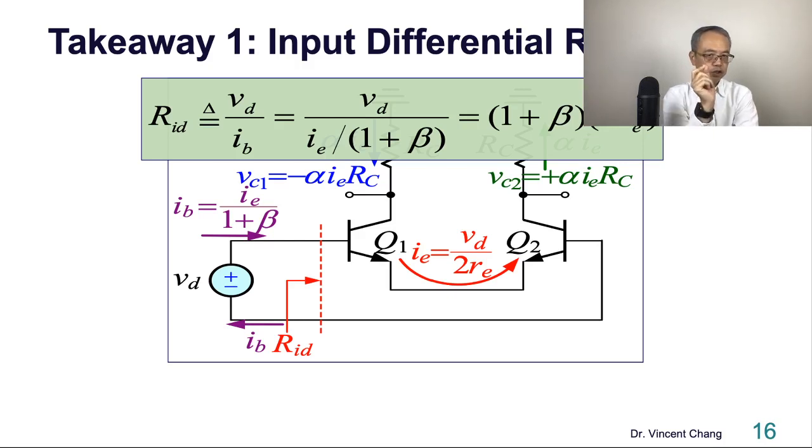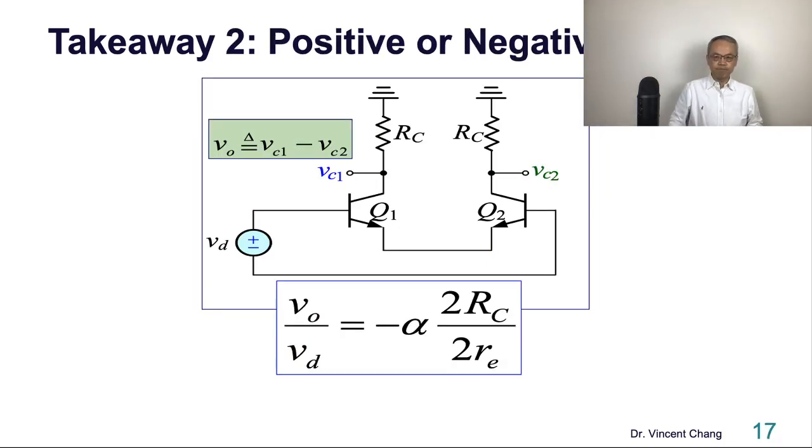First, remember the definition of the input differential resistance. It's the base perspective. You can be confident and use the resistance refraction rule. Just take the total emitter resistance. It's the first step when you conduct the small signal analysis. First step, total emitter. Just put it back to the base times one plus beta.